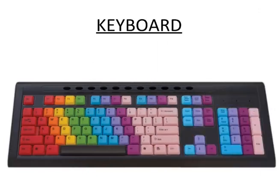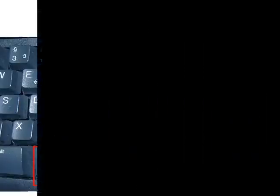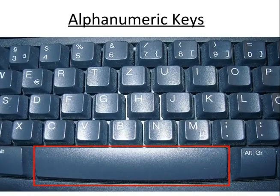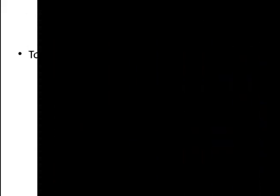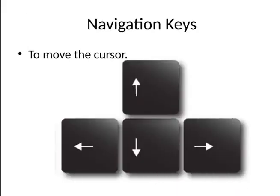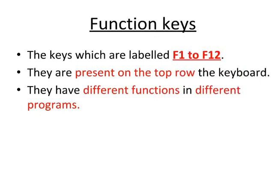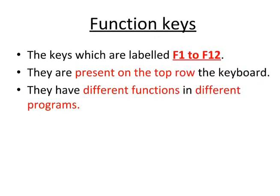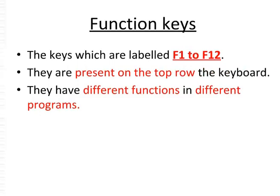Keyboard. It is used to type data and instructions. It has 104 keys which can be divided into many groups. Alphanumeric keys are used to type alphabets and numbers. Navigation keys are used to move the cursor up, down, left and right on the screen. Function keys are used to perform specific tasks and are labeled F1 to F12.